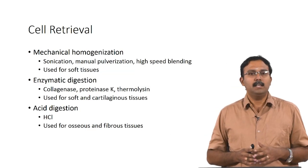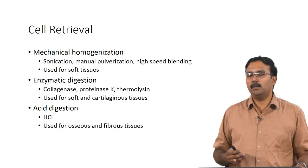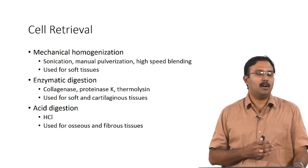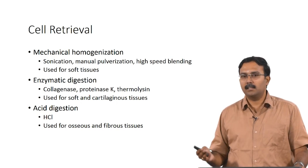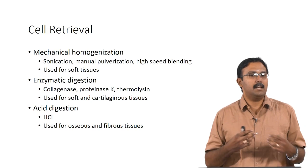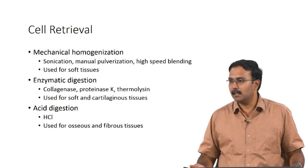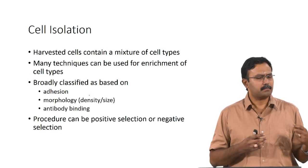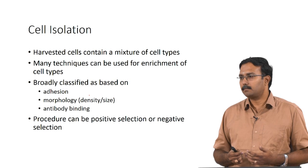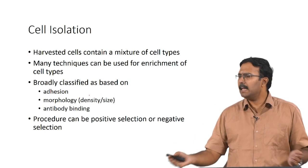Cell retrieval can be done in two or three steps. The first is mechanical homogenization using sonication, manual pulverization, or high-speed blending — usually done for soft tissues. Enzymatic digestion is done for soft and cartilaginous tissues using collagenase, proteinase K, and so on. Acid digestion using HCl is done for osseous and fibrous tissues — instead of enzymatic digestion, when you have hard tissues, you can use acid digestion.